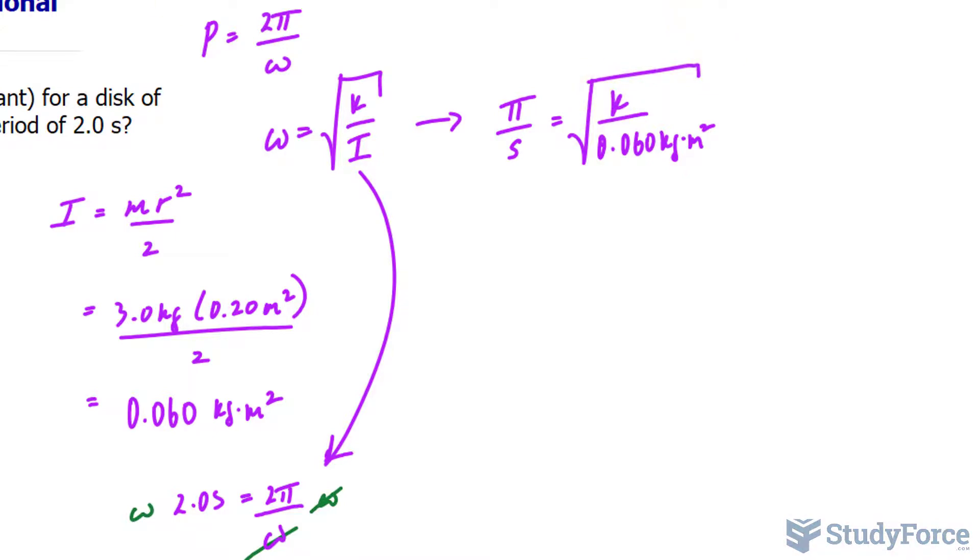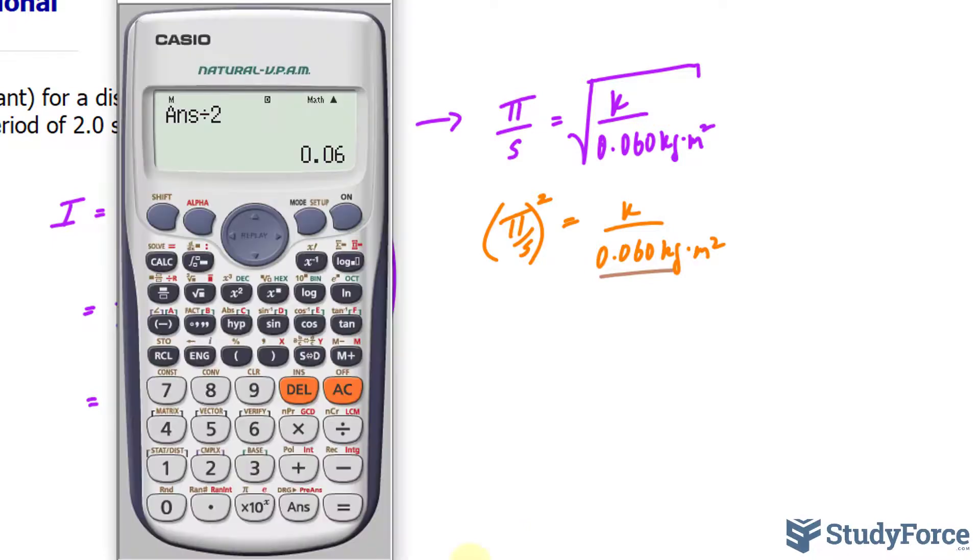Let's solve for k. First, I need to get rid of the square root, so I power both sides to an exponent of 2. And now I have k over 0.060 kilograms times meters squared. I'll multiply both sides by this value. So, I have 0.060 times pi raised to the power of 2.